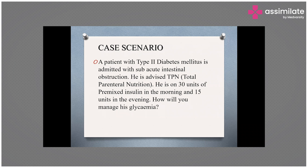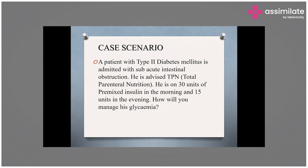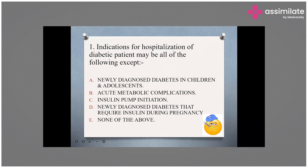Dr. Manan wrote glycemic control should be the priority, Dr. Sharad insulin as per sliding scale, Dr. Mohammad sub-acute intestinal obstruction first and then glycemia, Dr. Ramya insulin sliding scale adjusted, and Dr. Zeba wrote first control sub-acute obstruction and get serum glucose done. Let's begin with the question-and-answer round.